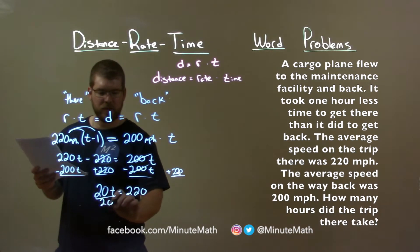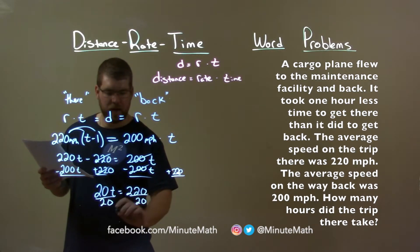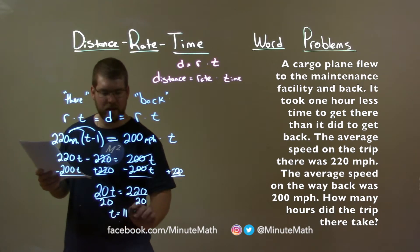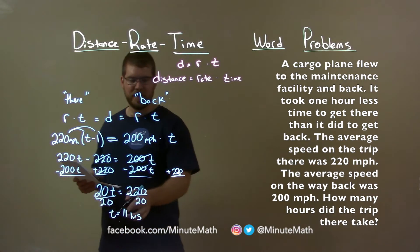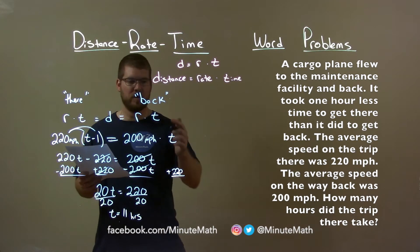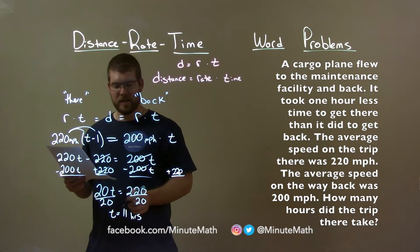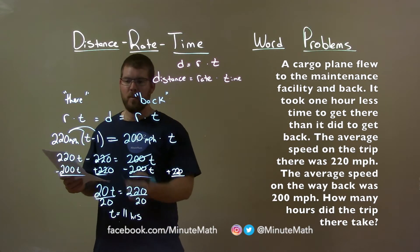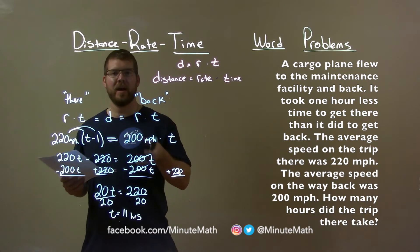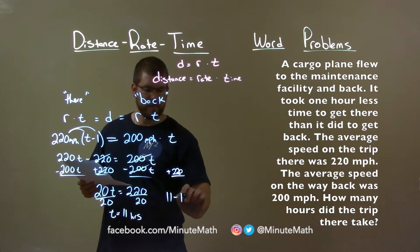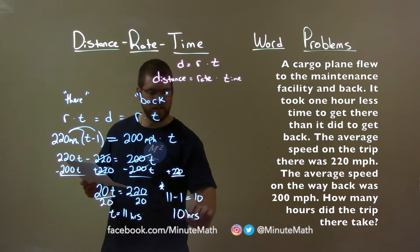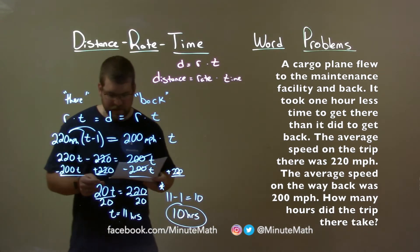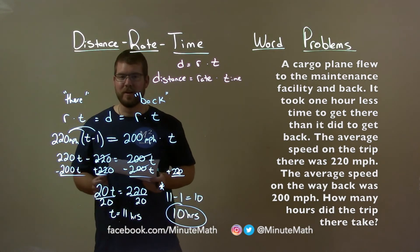Divide both sides by 20, and I'm left with t equals 11 hours. But remember, t represents the time back in our equation. So time back is 11 hours. We know we have one less hour to get there, so 11 minus 1 is 10. So 10 hours is the time it took to get there.